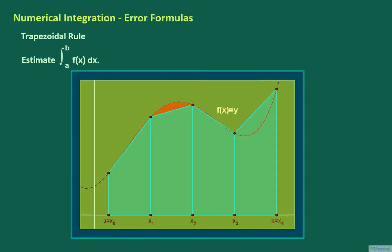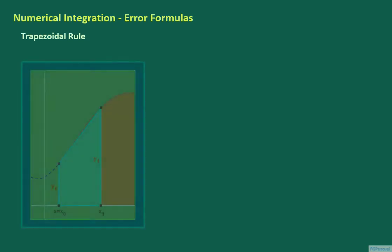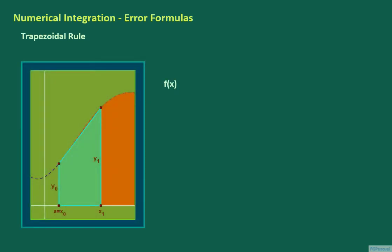We will use only the first subinterval to derive the error formula. Then, we will use the error formula for the first subinterval for the bound of the error for the entire interval from a to b. The top side of the trapezoid is the secant segment connecting the points at x sub 0 and x sub 1. The secant line through x sub 0 and x sub 1 corresponds to the Lagrange polynomial function through x sub 0 and x sub 1. We call this Lagrange polynomial function capital L of x. Using capital L of x as an approximation for f of x, f of x can be written as capital L of x plus an error term, which we call E of x.